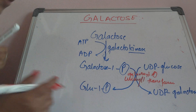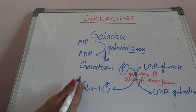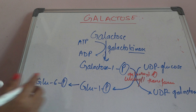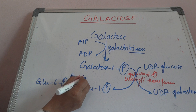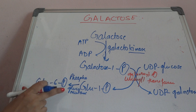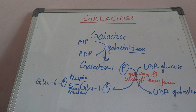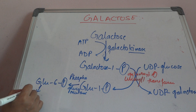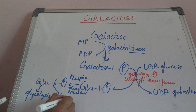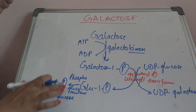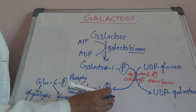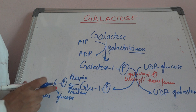Glucose-1-phosphate can form glucose-6-phosphate through the enzyme phosphoglucomutase. This glucose-6-phosphate is a molecule which can enter five different pathways of carbohydrate metabolism — it can enter glycolysis or lead to gluconeogenesis.